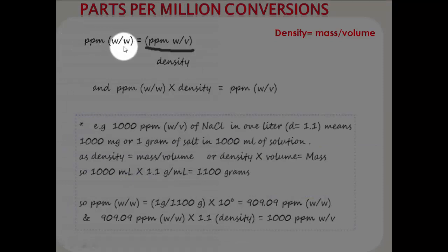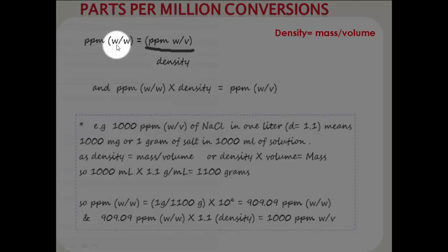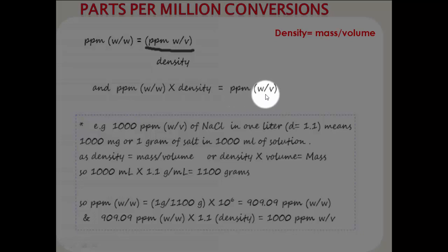If we have ppm weight by weight and ppm weight by volume, they can also be interconverted, and the only factor we need is density. The formula is simple: ppm weight by volume divided by density gives ppm weight by weight, or ppm weight by weight multiplied by density gives ppm weight by volume. These two can be simply interconverted by means of density.